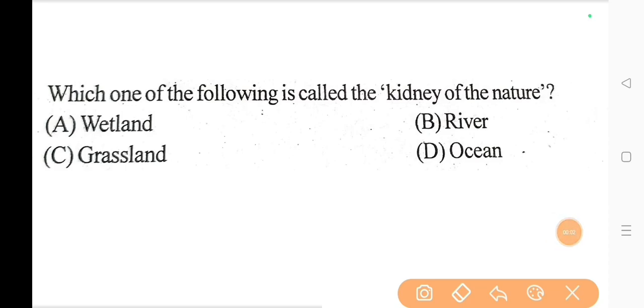Next question, which one of the following is called the kidney of the nature? Kidney of the nature, what is it? Option A, wetland.